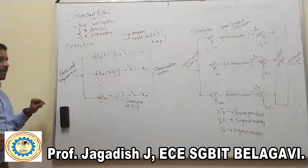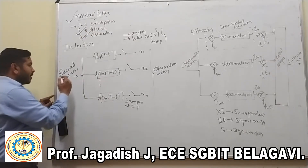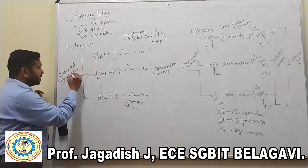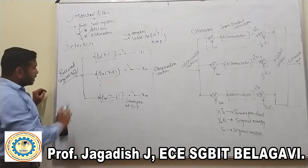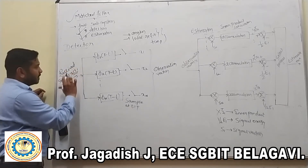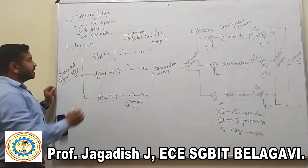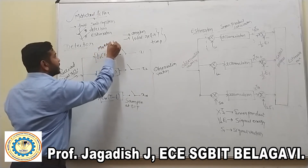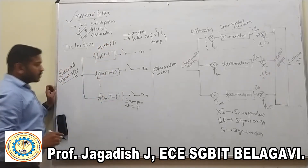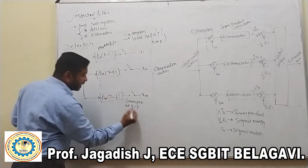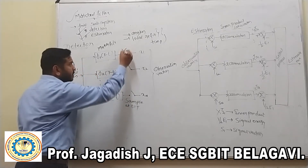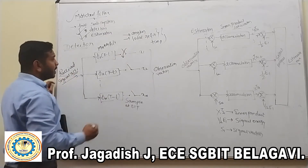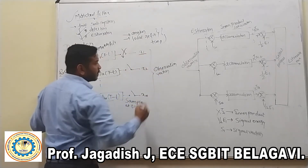First, we discuss the detector. Here we have the original information signal; the result signal is denoted by x(t). That x(t) result signal is applied to the matched filter. This matched filter handles synchronization time. Whenever small t equals capital T, the switch should be closed. Whenever the switch is closed, we can get the observation.